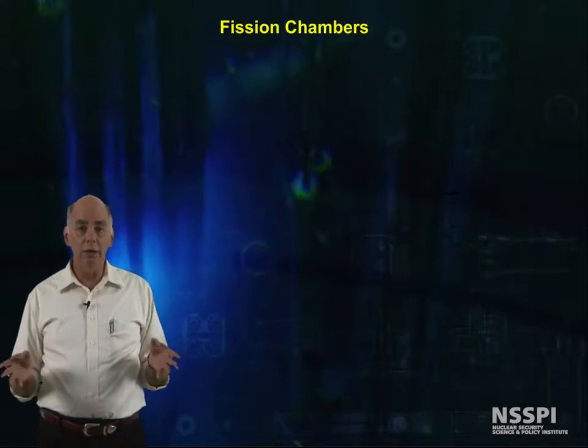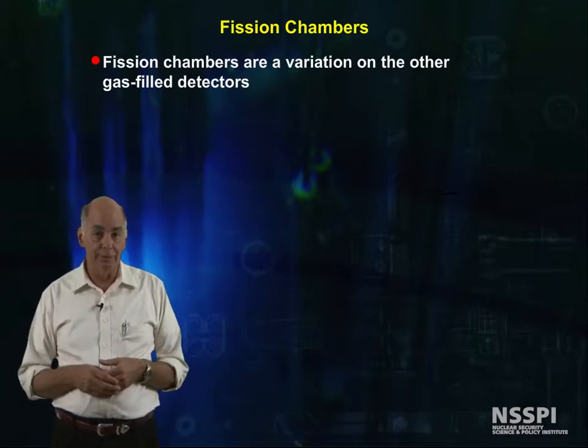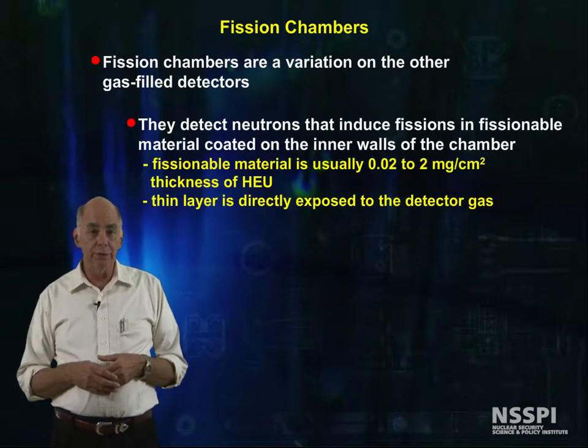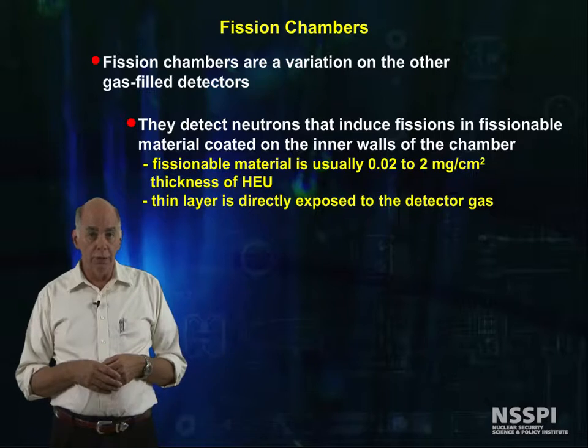Fission counters are widely used where you have lots of neutron signal, for example in reactors. They detect neutrons from induced fission of fissile material plated on the inner walls of the chamber. Usually this material is highly enriched U-235.